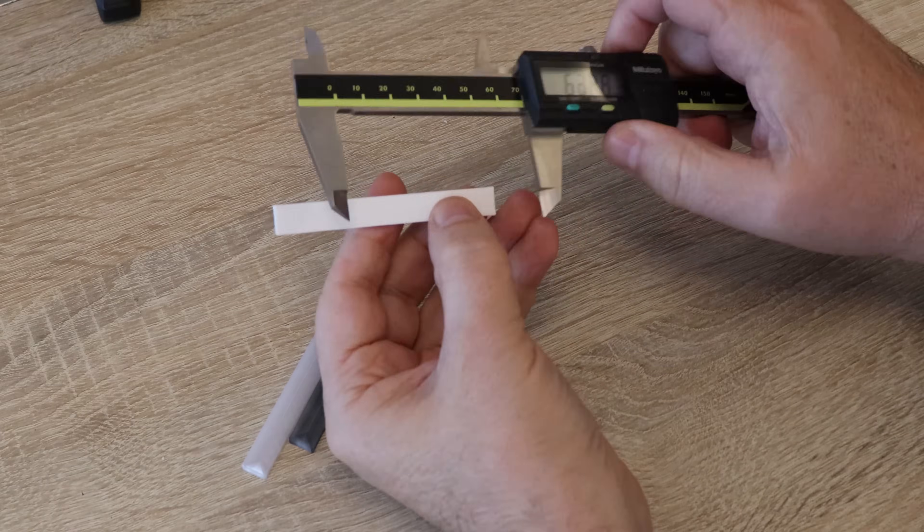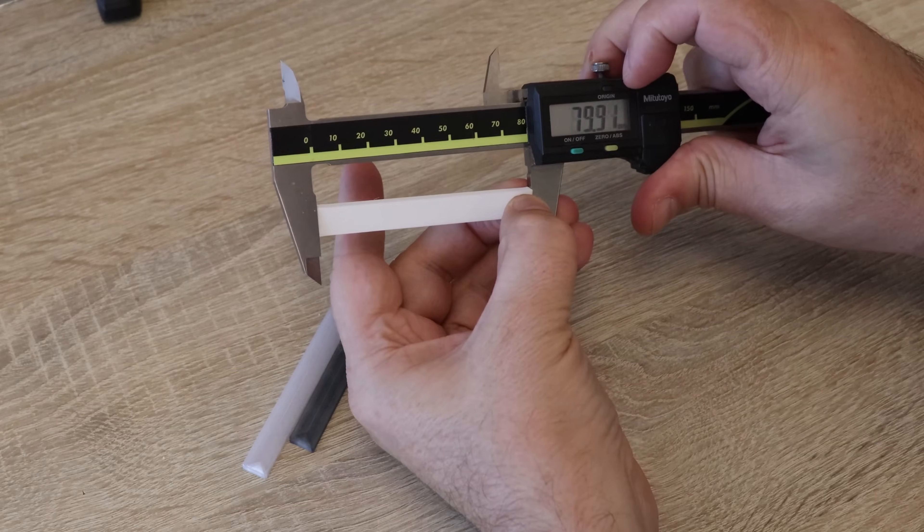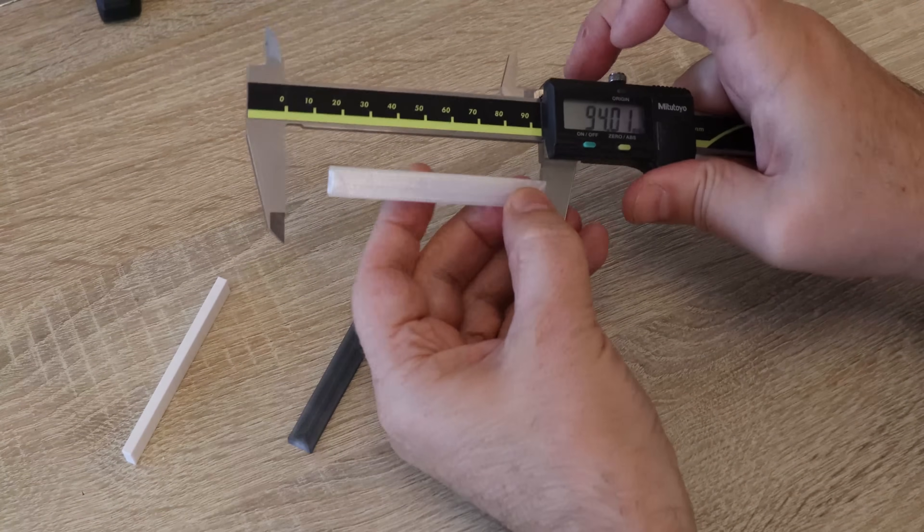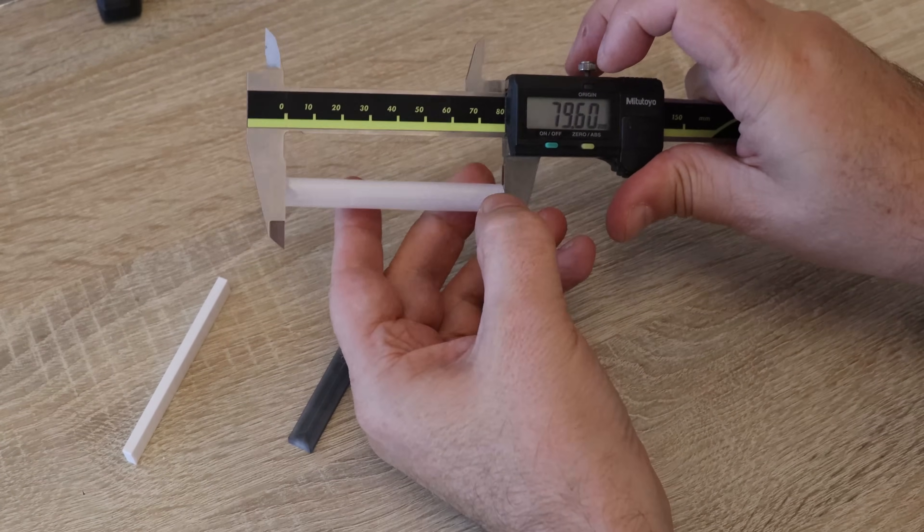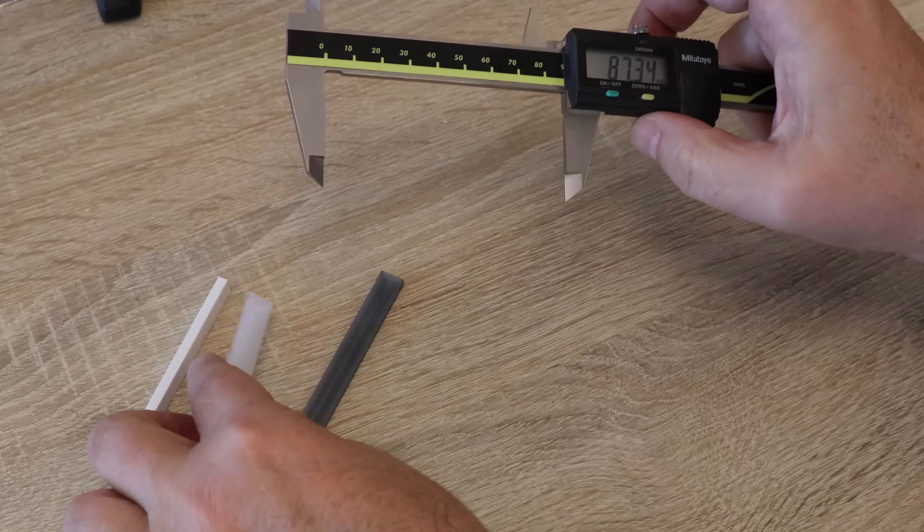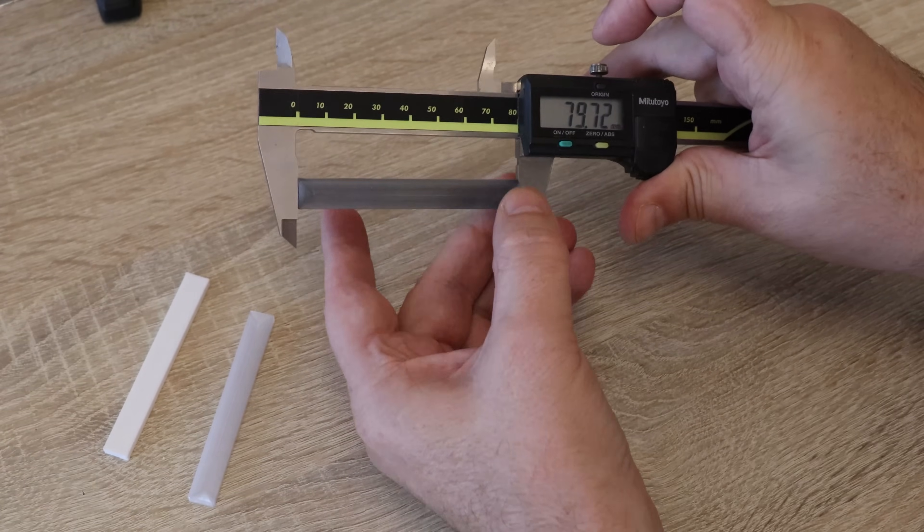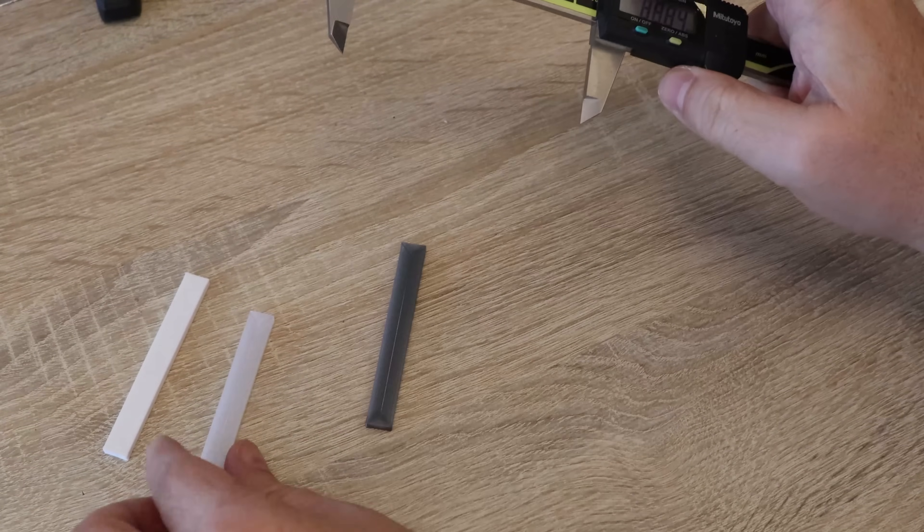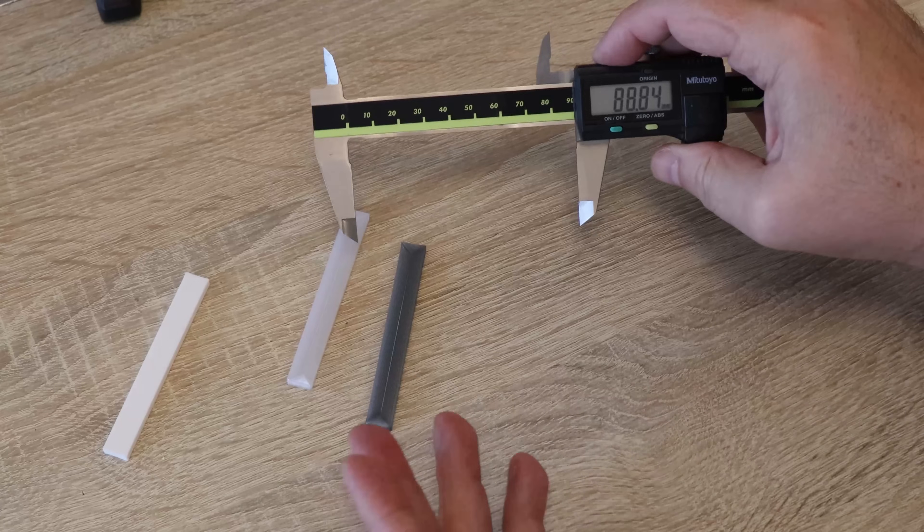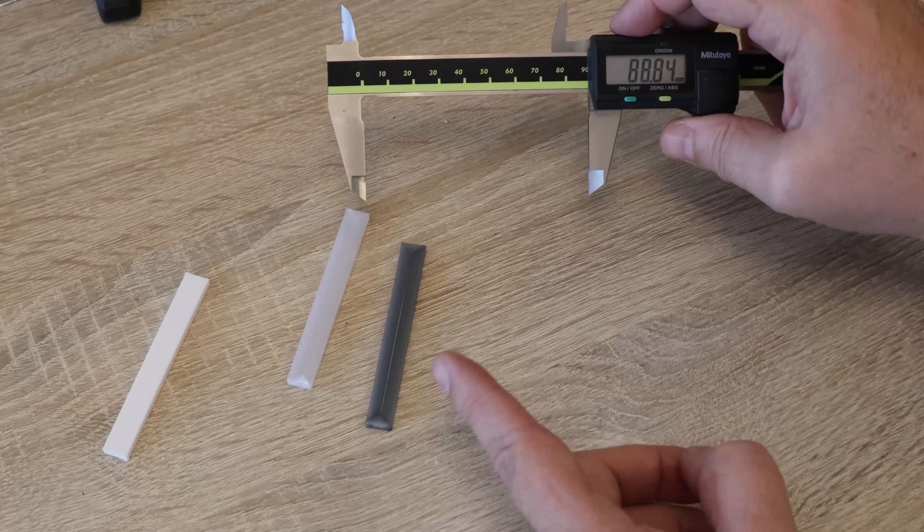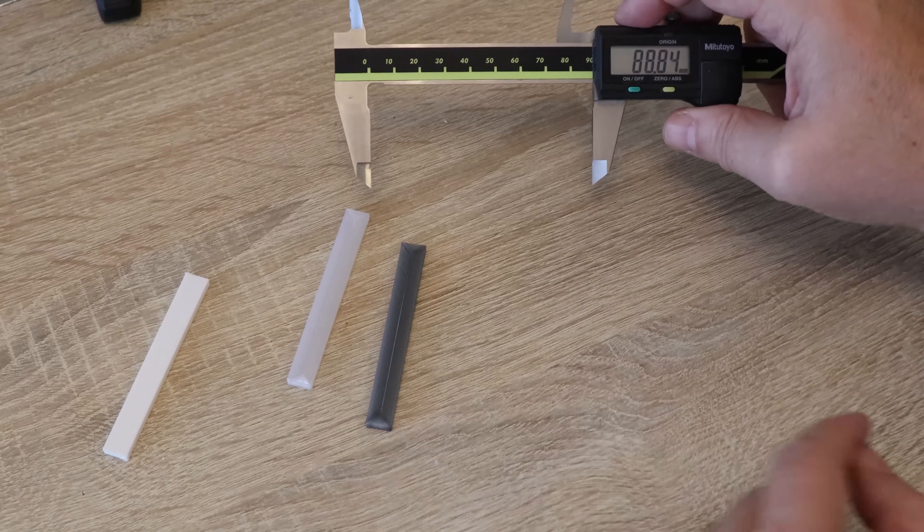Just quickly I want to check the shrinking which is important for dimensional accuracy. 79.73, 79.6, 79.72. So a little bit more shrinking on the transparent one. And just for reference, regular ABS has a shrinking of 0.5% and this would be 79.6 millimeters.